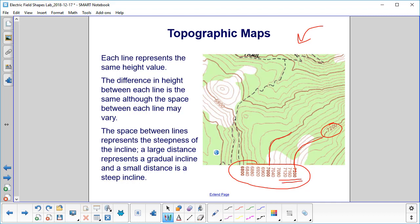The difference in height between each line is the same, although the space between each line may vary. So you see, we're counting here, every line goes up by 40 feet, but the space between them can be quite different.